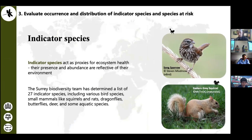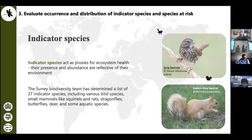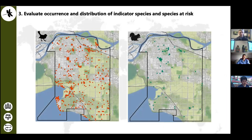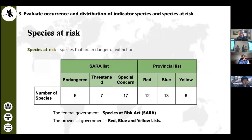Another aim of our project was to investigate the occurrence of indicator species and species at risk. Indicator species are species that act as proxies for ecosystem health — their presence and abundance reflect the health of their environment. The Surrey team has 27 different indicator species. We're able to subsample our dataset for just indicator species, and here we've plotted the song sparrow on the left and the eastern gray squirrel on the right. They follow patterns of being clustered around green areas as well.